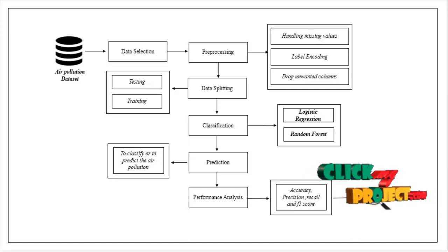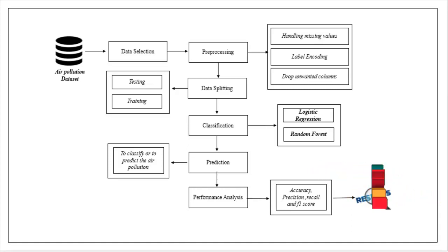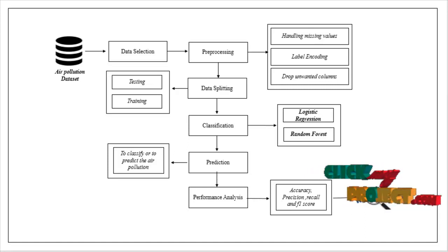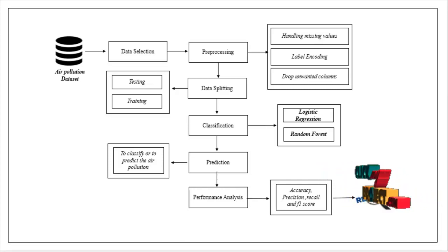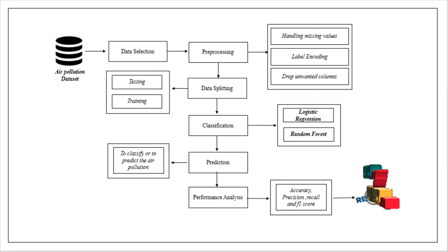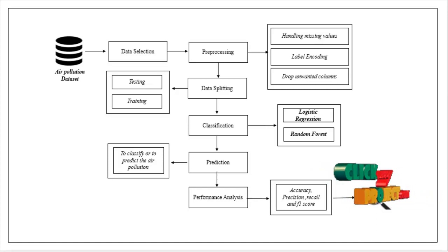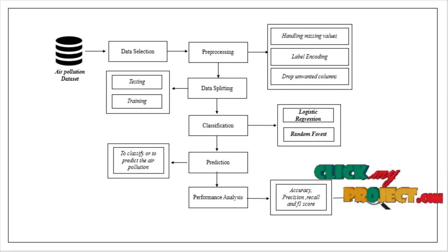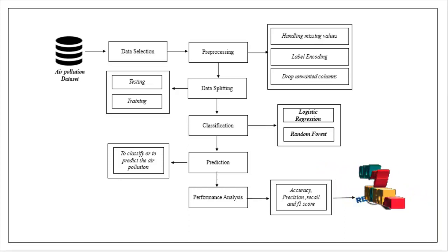Then the pre-processed data are carried out to the data splitting step. Here we have to split the whole dataset into testing and training sets. Testing is used for prediction and training is used for evaluation. The split data are carried out to the classification model, where we implement two different machine learning algorithms — logistic regression and random forest — and with the help of the classified data, we predict the air pollution.